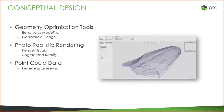One feature that's very useful is the ability to create manufacturable surfaces straight from point cloud data. We work with a lot of customers that do their initial concept design out in the real world rather than on the computer — well, that's no problem. If we're able to scan that geometry, our reverse engineering extension allows you to bring that point cloud data in, construct the surfaces, and build out the models to take further.